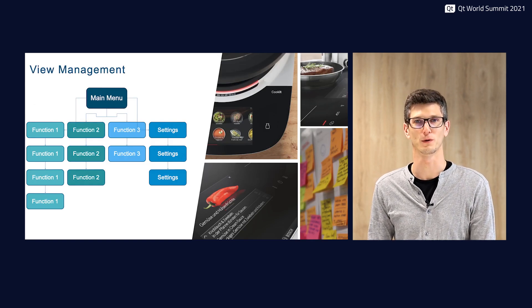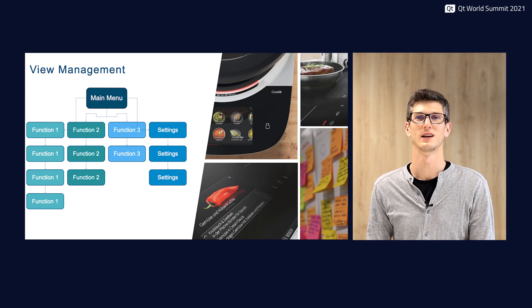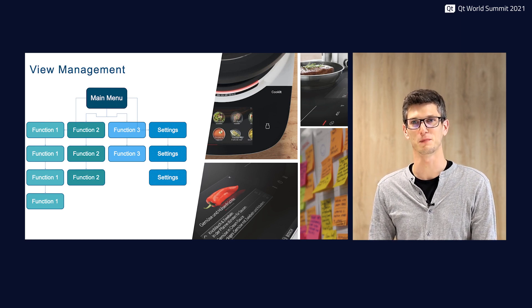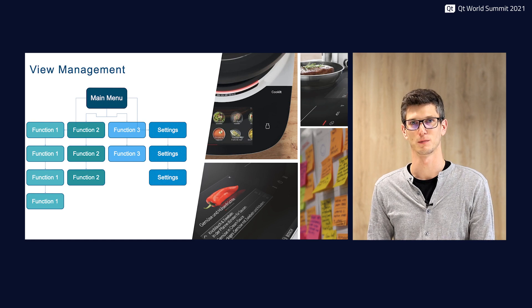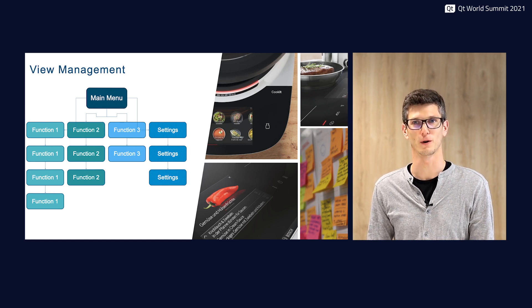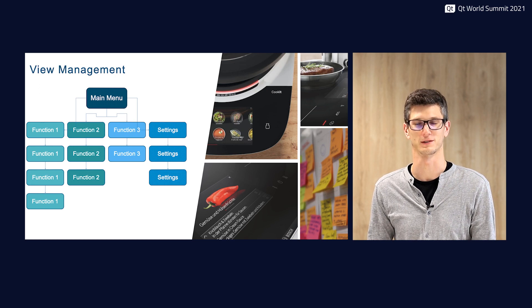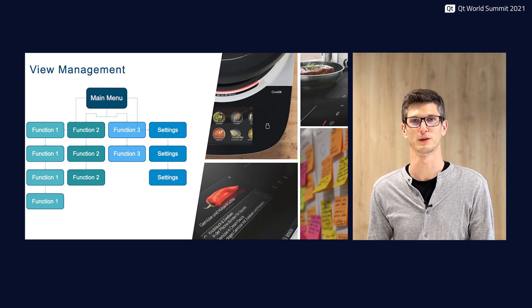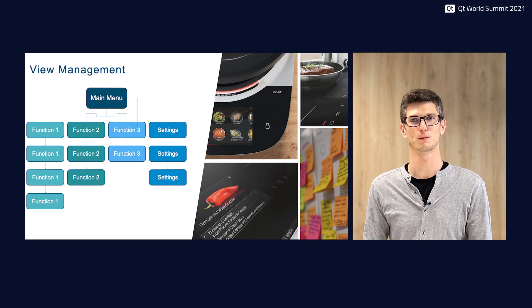Let's have a look at view management, one of the components of the GUI framework. Our appliances can have a quite complex view hierarchy, and loading all these views at application launch is too costly — both in RAM usage and time. The boot time would just be too high. For example, with a coffee machine you want to start brewing the coffee fast. So that's why we load views on demand, and we try to delete them as soon as they're no longer necessary. But we can also define relationships between them to keep logical groups in memory and assure fast view switches.